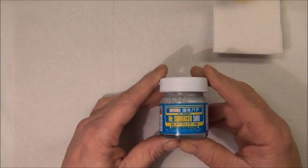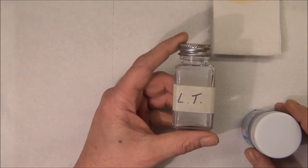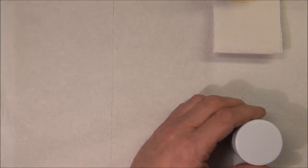Today I'm adding a light texture to the surface of this Nutcracker hull and turret. I will be using Mr. Surfacer 500 straight from the bottle.